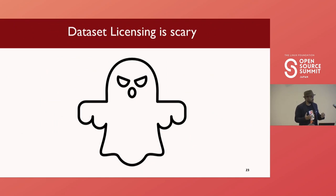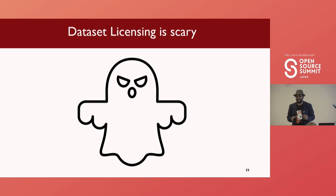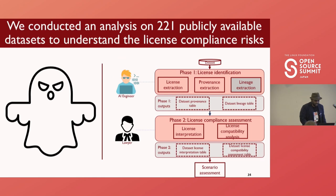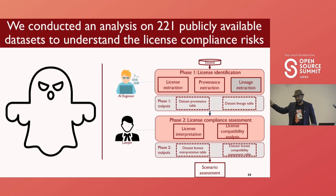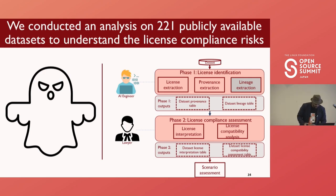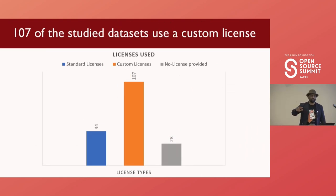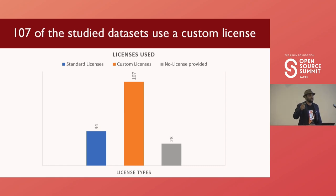That spurred us on to analyze more datasets. But first, we wanted to make sure our process can work for datasets being curated from different data sources. For datasets we curate ourselves, we already know the provenance and lineage. We conducted an analysis on 221 publicly available datasets. We did not do the full lineage extraction because 221 datasets is a large amount, and lineage extraction is hard — you have to read through all the papers and identify exactly what datasets they used. We wanted to first do this without lineage extraction, and once we've built more of a community, do more lineage extraction.